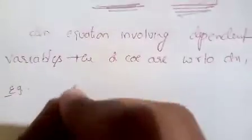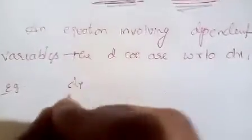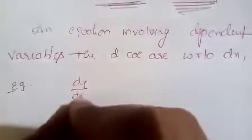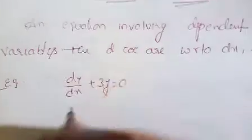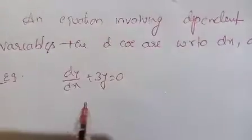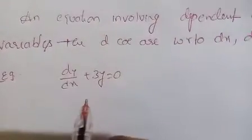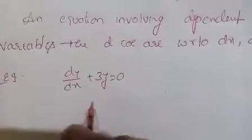Now, an example: dy/dx + 3y = 0. This is a differential equation.